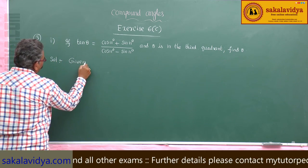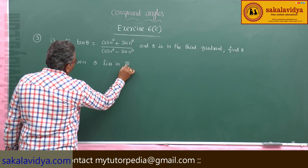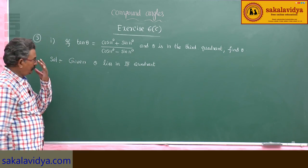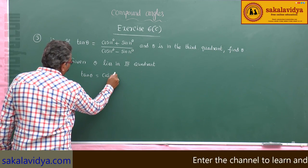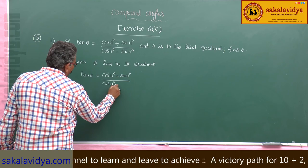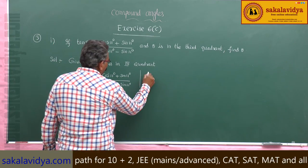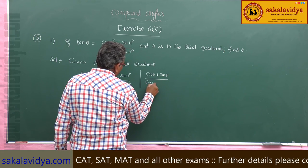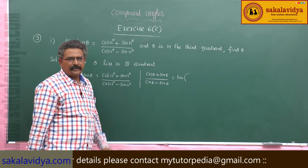Given theta lies in the third quadrant and tan theta equals cos 11 plus sin 11 divided by cos 11 minus sin 11. We have the formula: cos theta plus sin theta divided by cos theta minus sin theta equals tan of 45 degrees plus theta.